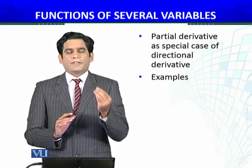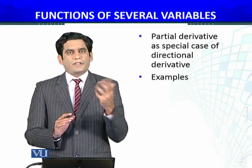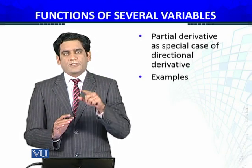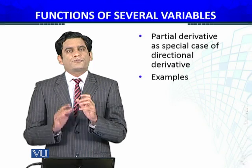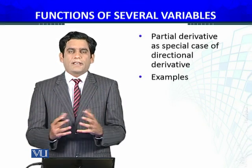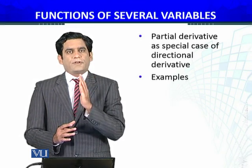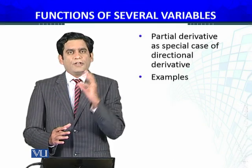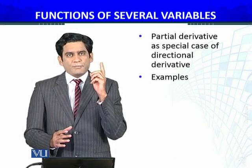If we have a function of more than one variable — two, three, four, five, ten, twenty, n variables — then the partial derivatives ∂f/∂x₁, ∂f/∂x₂, and so on, what do they mean? For each variable x₁, x₂, x₃, x₄, up to xₙ, I am going to define a unit vector in that particular direction.